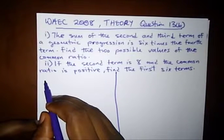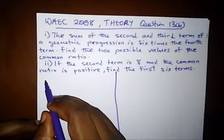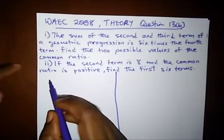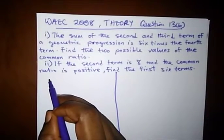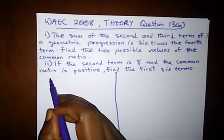The problem states: the sum of the second and third term of a geometric progression is 6 times the fourth term. Find the two possible values of the common ratio. Then in the second part, if the second term is 8 and the common ratio is positive, find the first six terms.